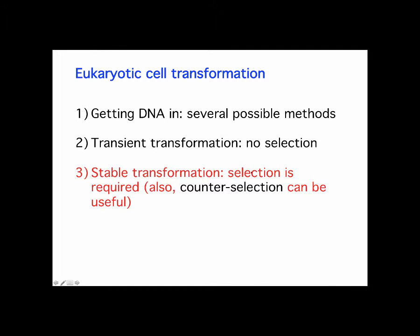If you want to do stable transformation — particularly if you're thinking about doing a knockout mouse or some kind of recombination relative to your genome — you want something stable. In order to do that, you really do have to have some kind of selection, usually these positive and negative selection processes.